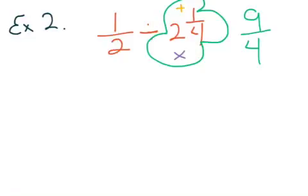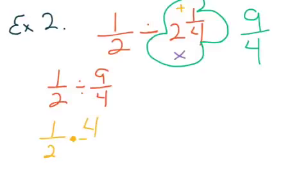Again, 4 goes into 9 two times with the remainder of 1 fourth. So, we could rewrite this as 1 half divided by 9 fourths. Then we use our understanding that we need to multiply by the reciprocal. So, we would keep the original fraction, the first fraction, change it to multiplication, and use the reciprocal. Copy, dot, flip. So, now we have 1 half times 4 ninths.